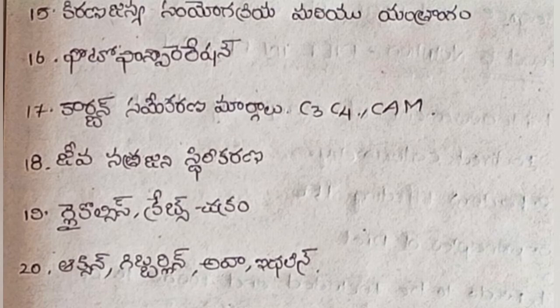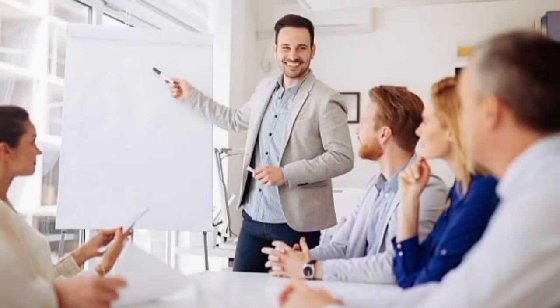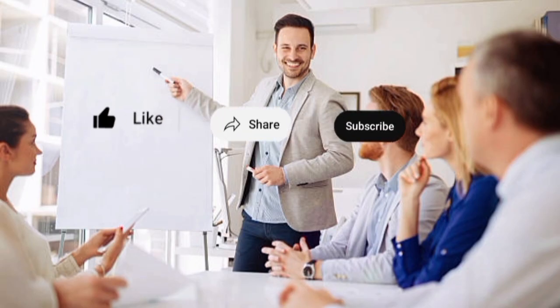Photophosphorylation. Question 17: Carbon Assimilation Pathways — C3, C4, CAM. Question 18: Biological Nitrogen Fixation. Question 19: Glycolysis and Krebs Cycle. Question 20: Auxin, Gibberellin, ABA, Ethylene. This is the second year fourth semester of Cell Biology and Plant Psychology important questions.